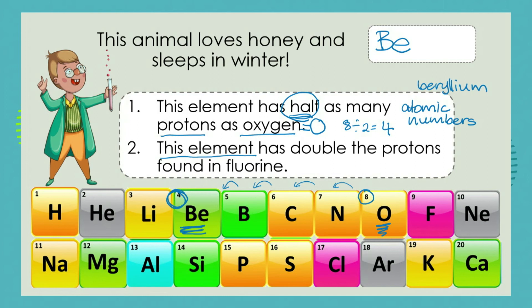So Be gives us our first two letters. Our second clue: this element has double the protons found in fluorine. Fluorine is the only element in our 20 with F as its symbol, and its atomic number is 9. Double 9 is 18, which takes us to the element called argon. And there we have our answer — the animal that loves honey and sleeps in winter is a BEAR.